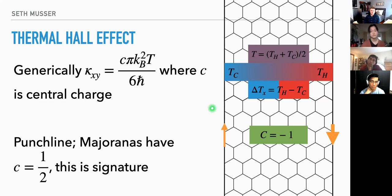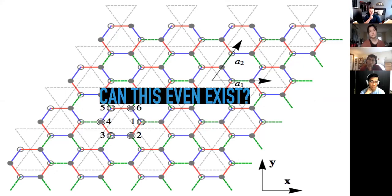This should be our signature — it's not going to happen for normal fermions, which have central charge one, because they don't look like these interesting fractionalized Majoranas.